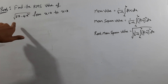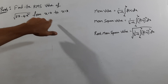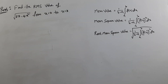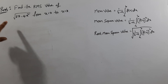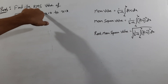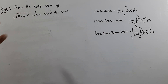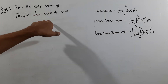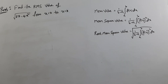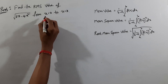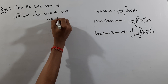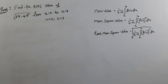Let's look at the first problem: Find the RMS value of the square root of (27 minus 4x squared) from x equals 0 to x equals 3. So here the range is 0 to 3. The a value is 0 and the b value is 3.